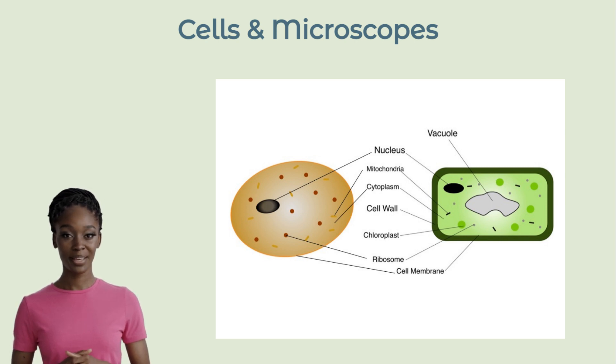Instead, they store water, nutrients and waste products in various structures throughout the cell. Additionally, animal cells are typically irregularly shaped, while plant cells are more rectangular.